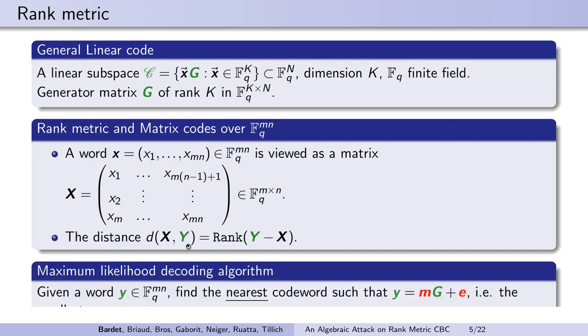If the length n is a composite integer, then a word of length m times n can be viewed as a matrix with m rows and n columns. We can now define the weight of a codeword by the rank of the corresponding matrix, and the distance between two words is the rank of the difference of the two corresponding matrices. Decoding a word corresponds to finding the nearest codeword with respect to the rank metric.